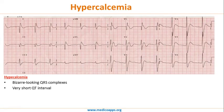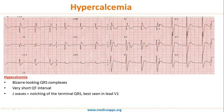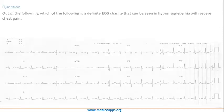In hypercalcemia, the major ECG changes are bizarre-looking QRS complexes and a very short QT interval. The QT interval — measured from the start of the QRS complex to the end of the T wave — typically should be less than nine small squares, but here it is only about five to six small squares. The most characteristic feature is J waves or notching of the terminal QRS, best seen in lead one and V1.